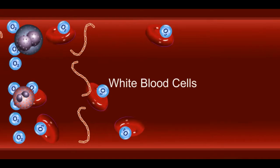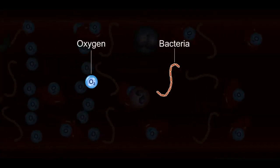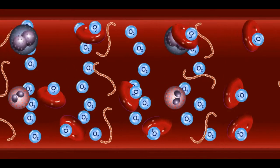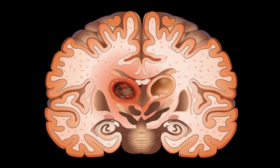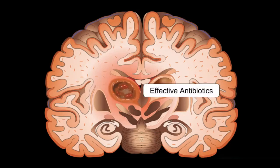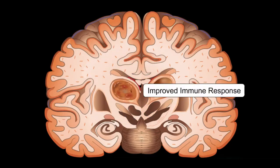Hyperbaric oxygen therapy increases the oxygen concentration in the blood and kills these bacteria. Due to the increase in oxygen, new blood vessels develop in the affected area. This improves the effectiveness of antibiotics and the body's immune response, which helps to clear the abscess from the brain.